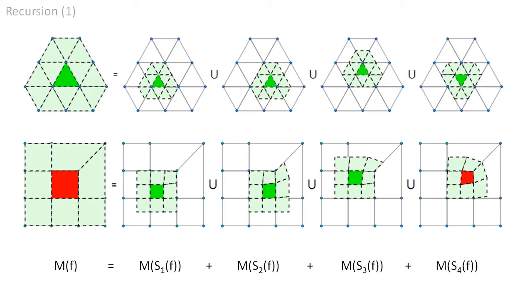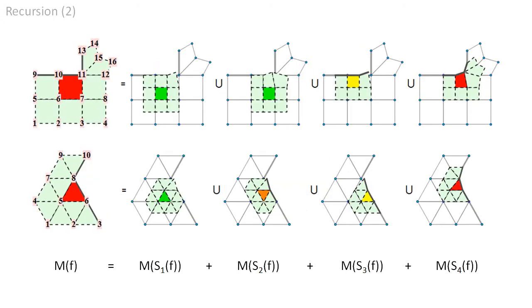The main equations come from demanding that the moment formula is invariant under one or more rounds of subdivision. On the level of facets, that means that the contribution of the facet equals the sum of the contribution of the smaller facets after one round of subdivision. The similar recursive relation helps to find the moment contribution for facets adjacent to sharp creases.